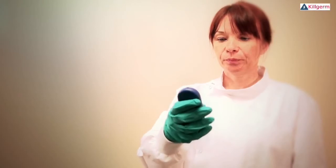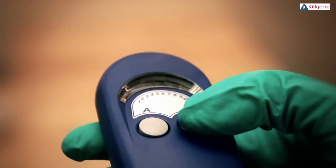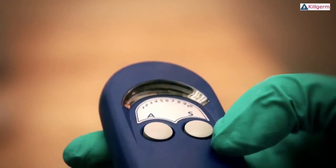After establishing a distance point from the flytrap using the table at the bottom of the UVA meter, press either button A or S to turn the unit on.